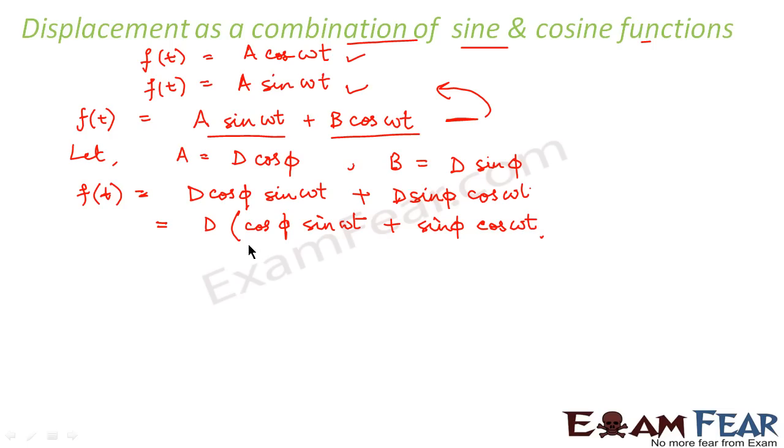So, we will have cos φ sin ωt plus sin φ cos ωt. What is this expression? Sin A cos B plus cos A sin B.